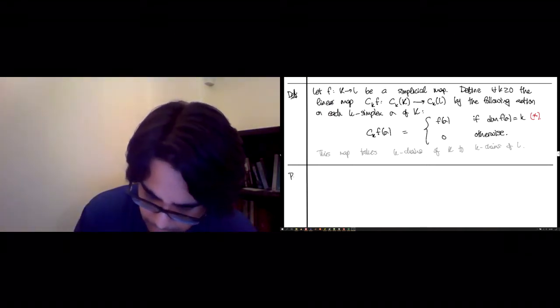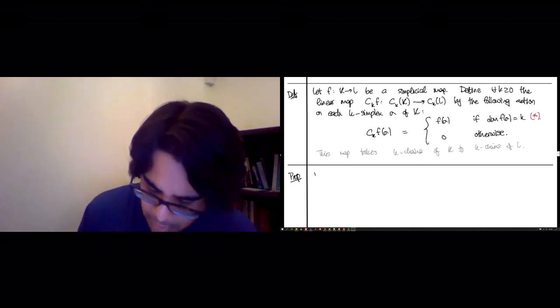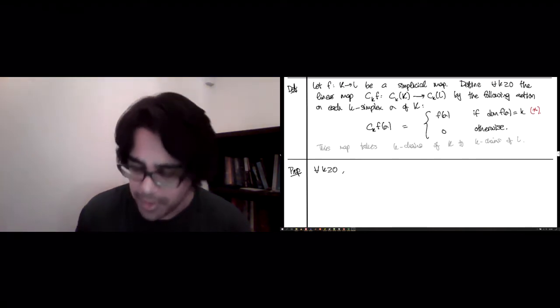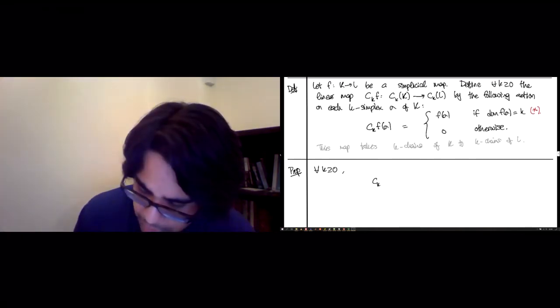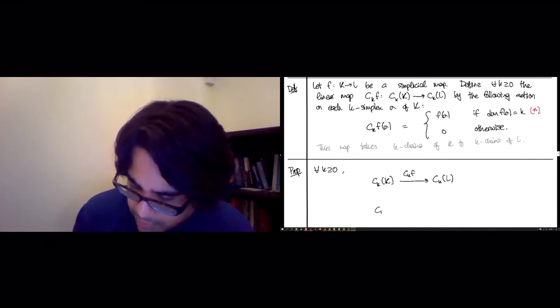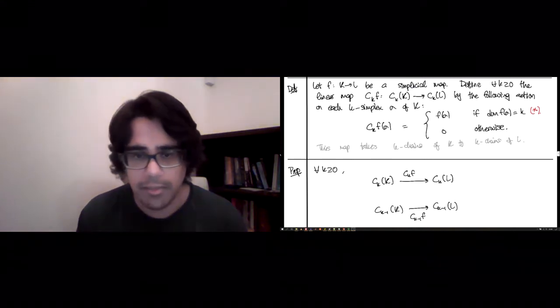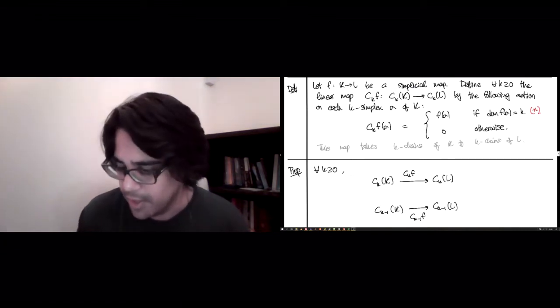So here you have, let's write it in the form of a proposition. For each dimension k greater than or equal to 0. So let's draw pictures of vector spaces. You have the k chains in K, which our map that we've just built is sending to the k chains of L. You have the same story happening in k-1 chains land.